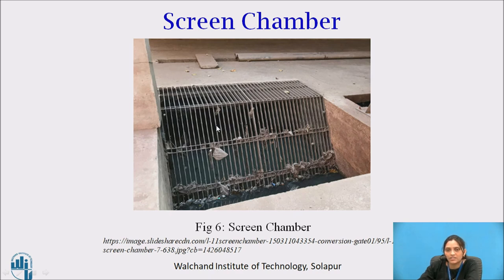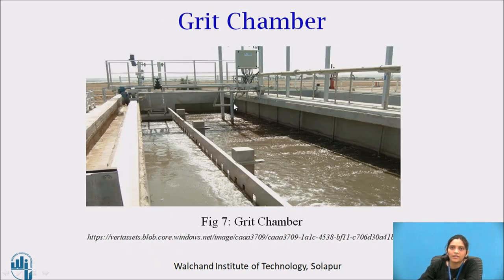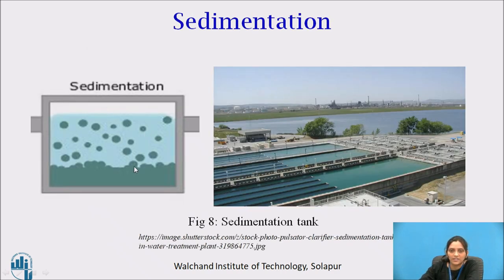We have seen a flow chart and theoretical definitions. If we look at the images, it is more clear how it actually happens. This is the image of the screen chamber — all the floating particles are removed primarily by this screen. This is the grit chamber — some primary level sedimentation occurs here, with large heavy particles removed, and floating oil or grease removed from the top. This is the third operation called sedimentation — all the heavy particles due to gravity are settling down at the bottom. The flow rate of water is slowed so that it allows heavy particles to settle down.